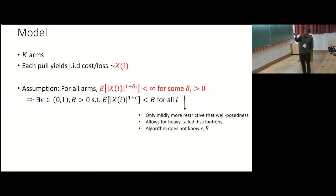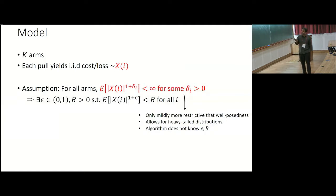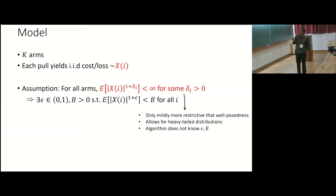The existence of some positive δ is only mildly more restrictive than requiring the expectation to exist — we just need the (1+δ)-th moment to be finite. Importantly, this allows for heavy-tailed distributions — all except boundary cases where the expectation exists but no (1+ε) moment is finite. Most importantly, our algorithm doesn't know any of these δ_i's, the bounds b, or the value of ε. That's what we mean by environment-obliviousness: we assume a little more than well-posedness, but the algorithm has no knowledge of the moment bounds.